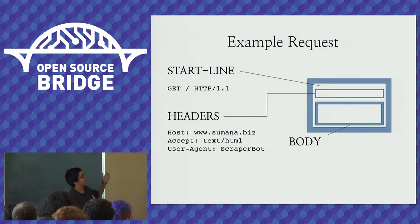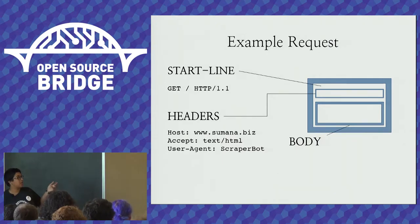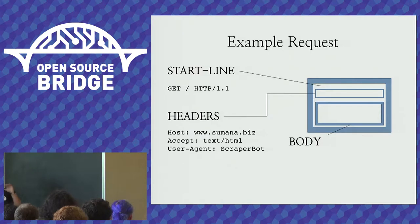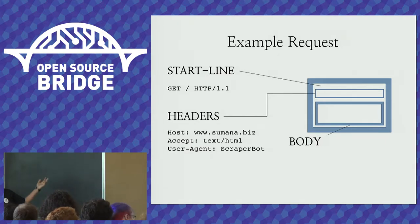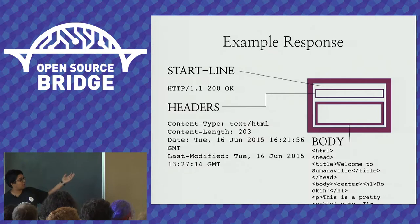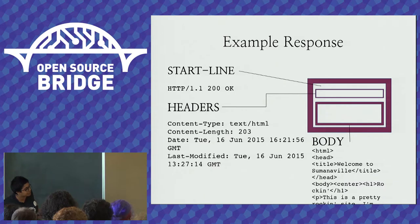Here's an example request. The start line might be GET slash — the root, the top-level thing — HTTP 1.1. Headers might include the host, what I'd like to accept (in this case HTML), and the user agent — if you've written a scraper, you might call it 'scraper bot.' The body is empty because this kind of request doesn't need one. The example response starts with HTTP 1.1 200 OK, some headers like date and last-modified, and then the body — some HTML saying 'Welcome to Sumitaville, it's a pretty rockin' site.'